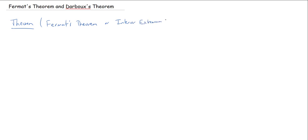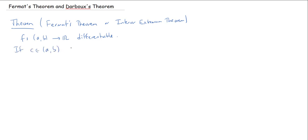The interior extremum theorem — I'd never heard that language before reading Abbott's book, but it makes sense. Here's the idea: we have a function f on an open interval (a, b) and we assume that f is differentiable. If I find some point C between a and b whose image is at least as big as all other images of f, then the derivative at that point must be zero. So if C is in (a, b) such that f(C) ≥ f(x) for all x in the interval, then f′(C) = 0.